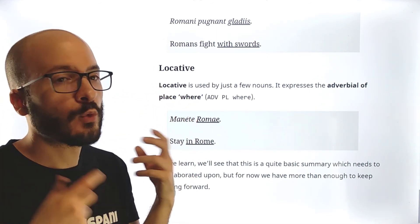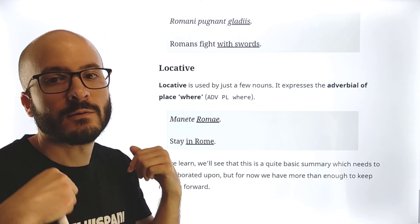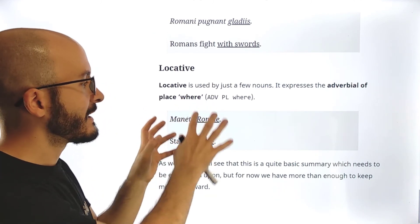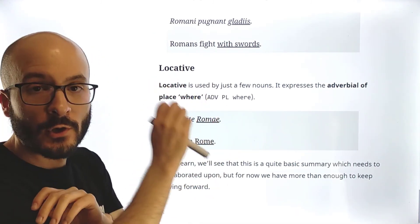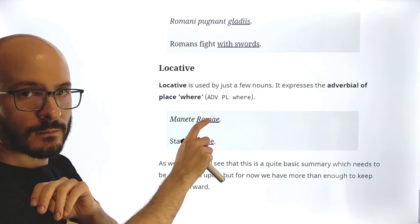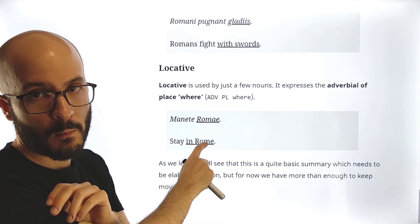That we would translate it with a preposition of location in, at, on, whatever. But in Latin, in Latin is just directly the noun in the locative, no preposition. So for example, manete Romae, it would be stay in Rome.